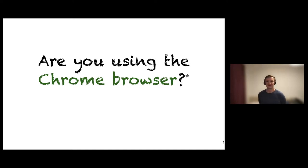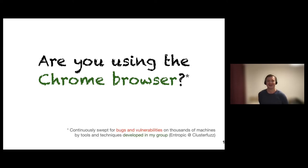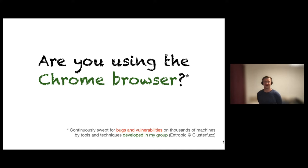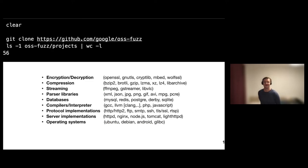Before I start with the technical matter, a quick question: are you using a Chrome browser? If you use the Chrome browser, it's very likely that your daily life is impacted by the tools that I developed in my group. Their fuzzers are used at a very large scale, even at the scale of the Chrome browser. One of the tools I developed called Entropic is used in the huge fuzzing infrastructure developed at Google to test your software. And even if you're not using Google, many open source projects that facilitate encryption, compression, and streaming on the internet are also being fuzzed by the tools we developed.